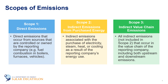Scope 2 emissions are indirect emissions from purchased energy. Scope 2 indirect emissions are associated with the purchase of electricity, steam, heat, or cooling as a result of the company's energy use. Scope 3 emissions are a little more complicated. We can define Scope 3 emissions as all indirect emissions not included in Scope 2 that occur in the value chain of the company, including both upstream and downstream emissions. We'll give a visual of what this means in the next slide.